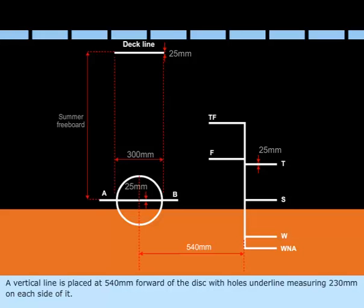A vertical line is placed at 540mm forward of the disc with holes underline measuring 230mm on each side of it.